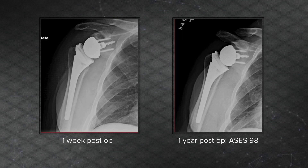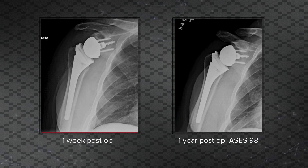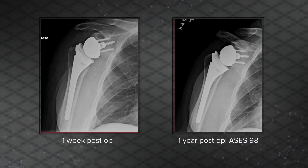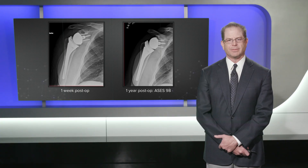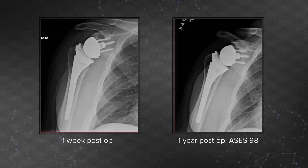The humeral component utilized was the Arthrex reverse humeral component. I chose this component because it allows versatility in implantation, being able to place the metaphysis at either 135 or 155 degrees and allows accommodation of any posterior offset. The implant comes in one-millimeter increments to obtain a nice press fit in this revision situation and is coated with calcium phosphate to allow for bone on-growth.